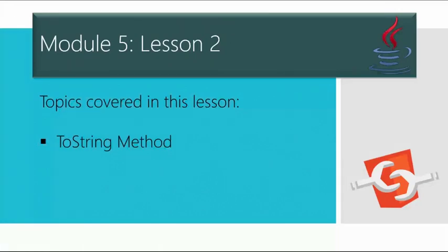In this lesson, I'm going to demonstrate the concept of the Java toString method. Basically, if you want to represent any object as a string, the toString method comes into existence. The toString method would return the string representation of that object. So for example, if you print any object, the Java compiler internally invokes the toString method on the object, and overriding the toString method would return the desired output.